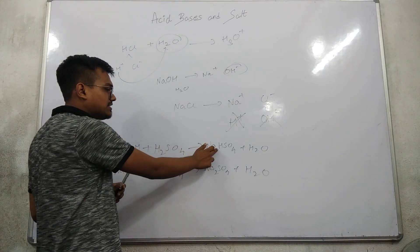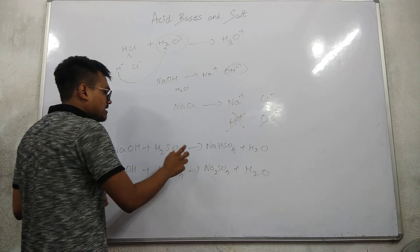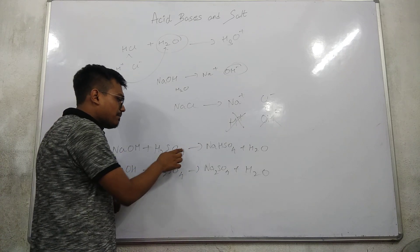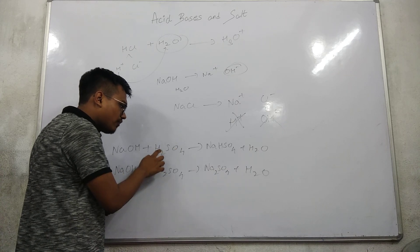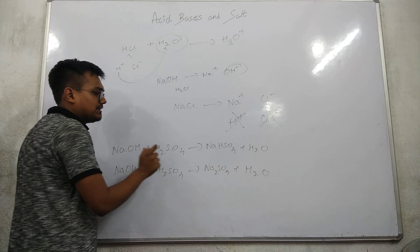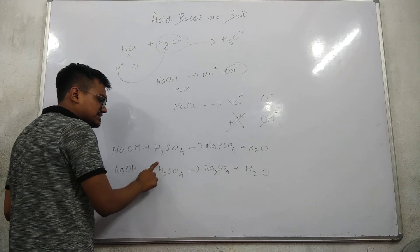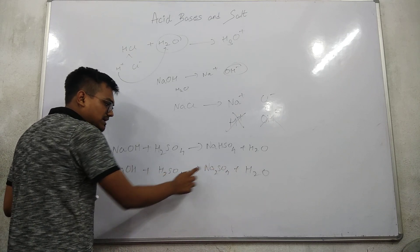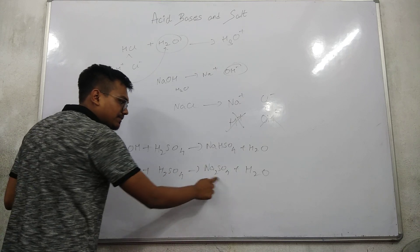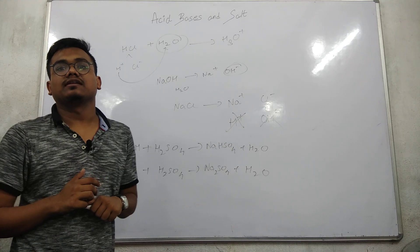The salt NaHSO4 formed here is an acid salt — that is, a salt formed by the partial replacement of the hydrogen ion by a metallic ion. Na2SO4 is a normal salt, meaning it is formed by the complete replacement of the hydrogen ion by a metallic ion.